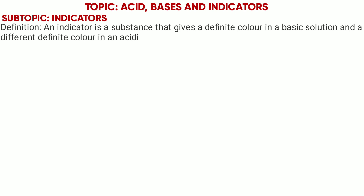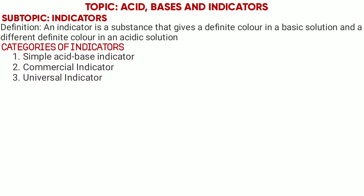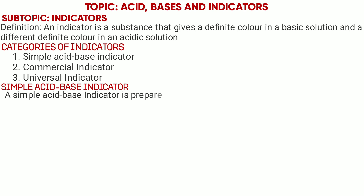We have three categories of indicators. We have the Simple Acid-Base Indicator, we have Commercial Indicators, and the third is the Universal Indicator. A Simple Acid-Base Indicator is prepared in the laboratory from flower extract, red cabbage, or beetroot.